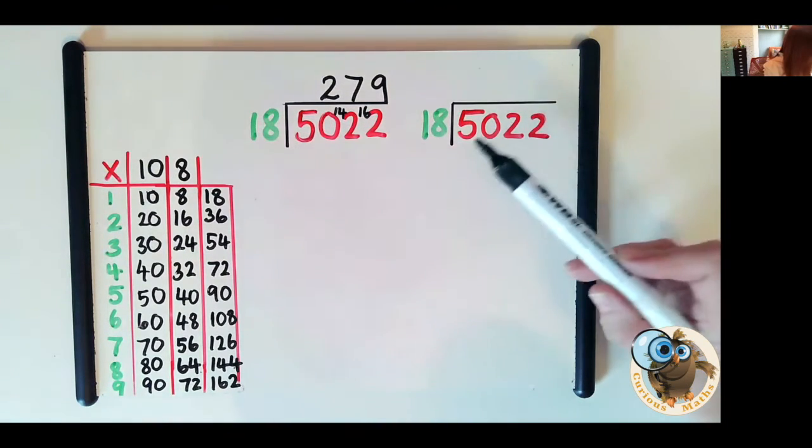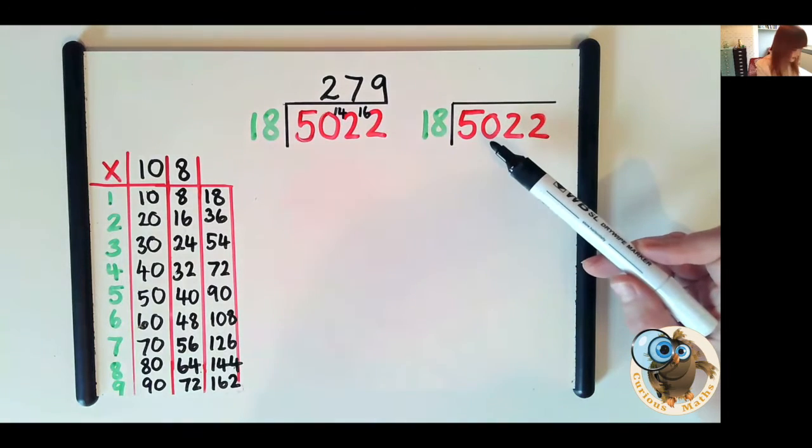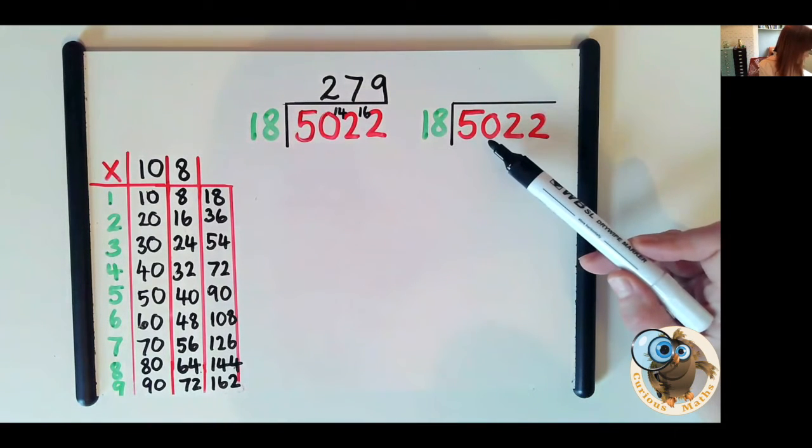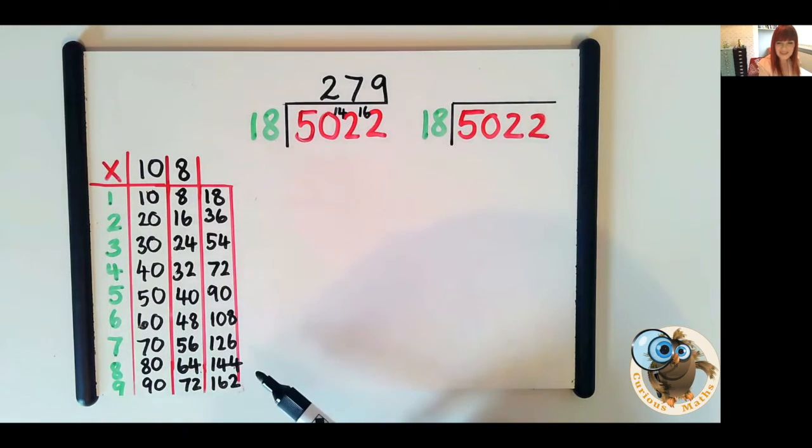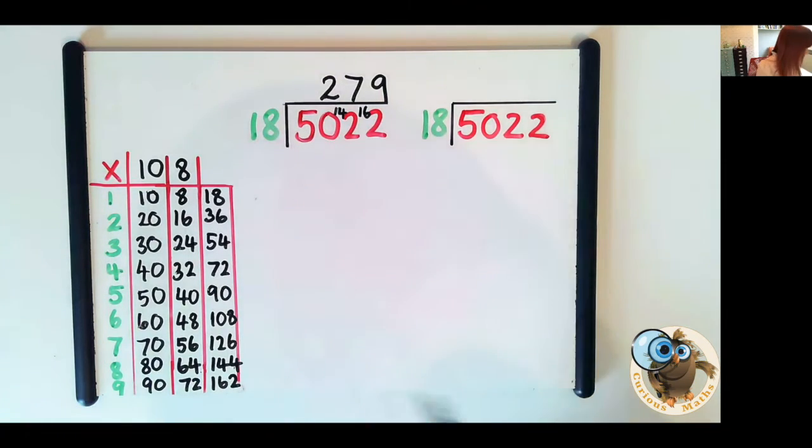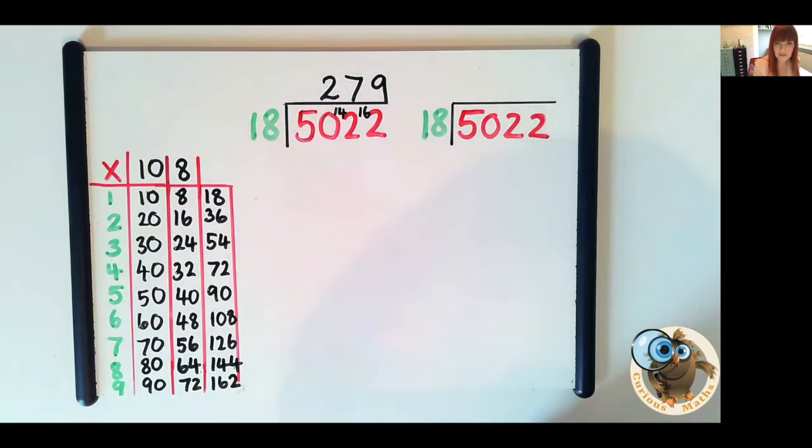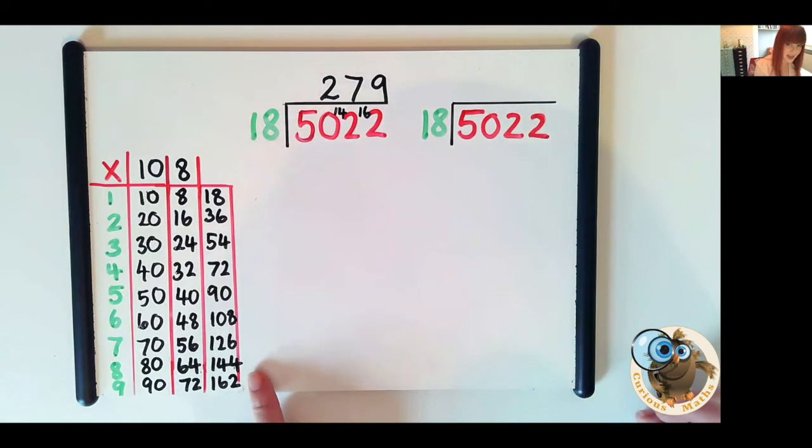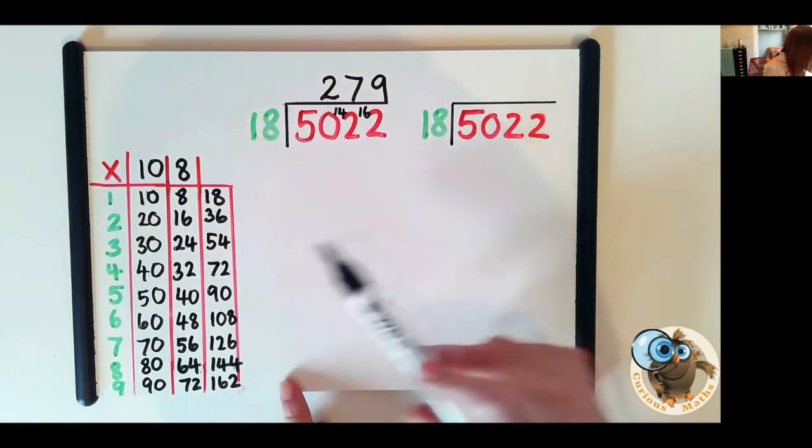So let's do how many 18s in 5, zero, how many 18s in 50. Now I've already populated this one but this is our partitioned 18 and the reason we've done this is so we don't have to stop at this point and work out how many 18s are in 50 and then go back to the method. By doing it this way we've got it to hand and it just keeps that flow.